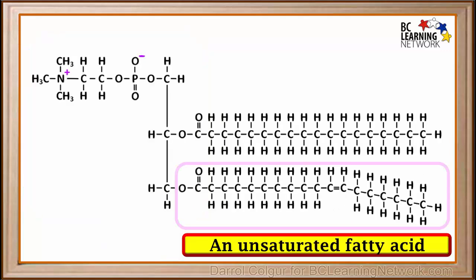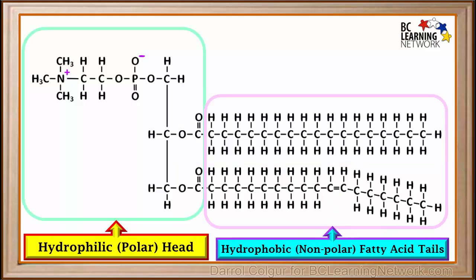Note that sometimes either one or both of the fatty acids in a phospholipid can be unsaturated, which means it has one or more double carbon-carbon bonds and less hydrogens than a saturated fatty acid. Notice the presence of a double bond alters its shape, but the fatty acid tail is still hydrophobic and nonpolar.